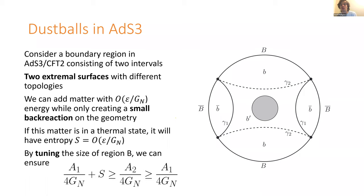If the matter is in a thermal state, it has entropy S that is order epsilon/G Newton. By tuning the size of the boundary region B to be very close to half the boundary, we can set things up so that S is enough to change which of the two extremal surfaces has smaller generalized entropy. Specifically: A1/4G + S > A2/4G, but A2/4G > A1/4G.